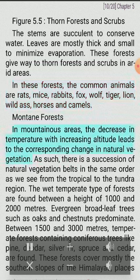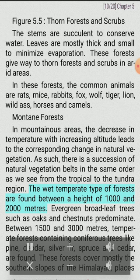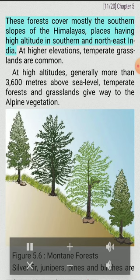Montane Forests: In mountainous areas, the decrease in temperature with increasing altitude leads to a corresponding change in natural vegetation. There is a succession of natural vegetation belts in the same order as we see from the tropical to the tundra region. The wet-temperate type of forests are found between a height of 1,000 and 2,000 meters, where evergreen broad-leaf trees such as oaks and chestnuts predominate. Between 1,500 and 3,000 meters, temperate forests containing coniferous trees like pine, deodar, silver fir, spruce and cedar are found. These forests cover mostly the southern slopes of the Himalayas and places having high altitude in southern and northeast India.